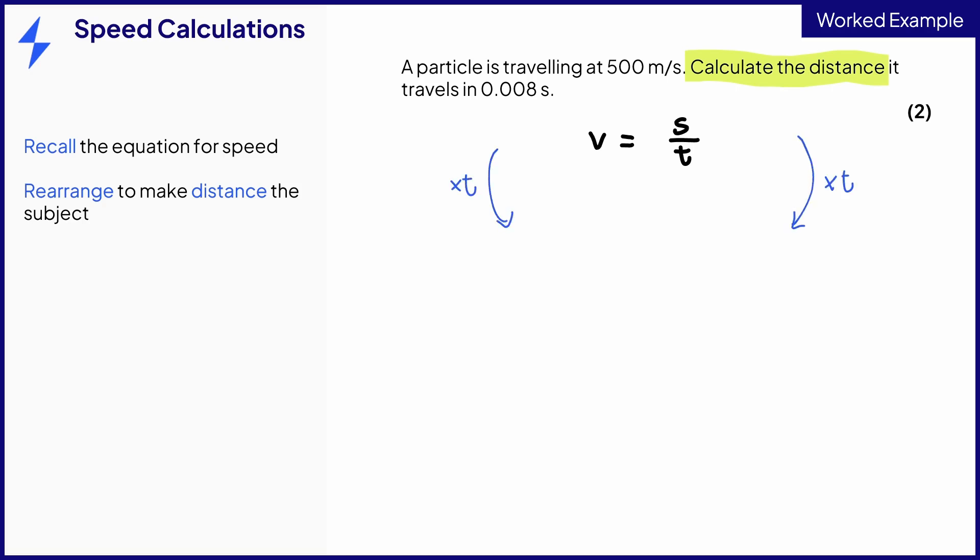Multiplying both sides by t gives us the following equation. This is identical to the speed equation, we have just included a multiplied by t factor on each side. On the right, the t terms cancel out, leaving only s, which represents distance. We'll swap the equation around so distance is on the left, but this is purely for neatness.